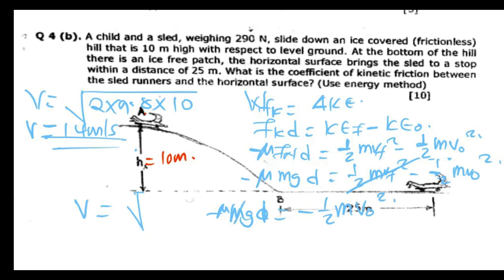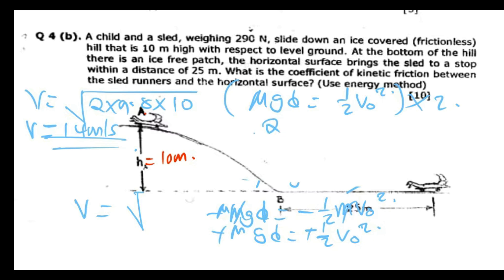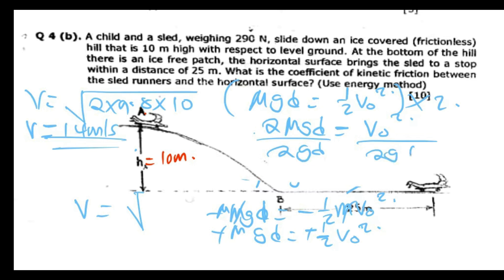We can cancel the mass M from both sides, giving negative mu times g times D equals negative half V_initial squared. Canceling the negatives: mu times g times D equals half V_initial squared. Multiplying both sides by 2 and dividing by 2gD, we get mu equals V_initial squared divided by 2gD.